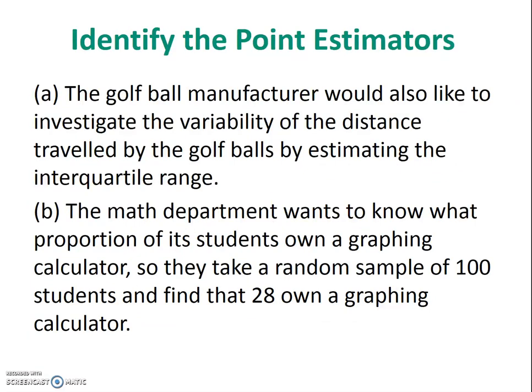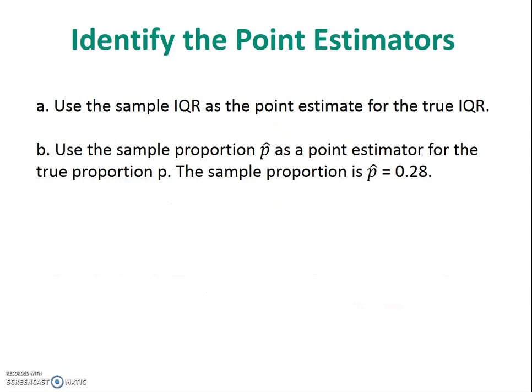Let's talk more about point estimators with two examples. A golf ball manufacturer wants to investigate the variability of the distance traveled by golf balls by estimating the interquartile range. The math department wants to know what proportion of its students own a graphing calculator — they take a random sample of 100 students and find that 28 own one. For A, we want the true IQR, so the best place to start is the sample IQR. For B, the best place to start is the sample proportion, P-hat, which equals 0.28. So if you want to know something about the population parameter, start with the sample statistic.